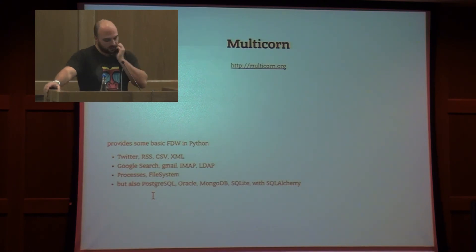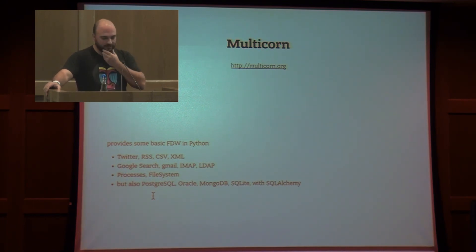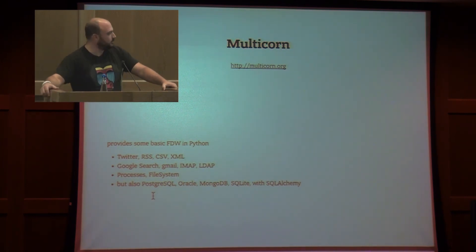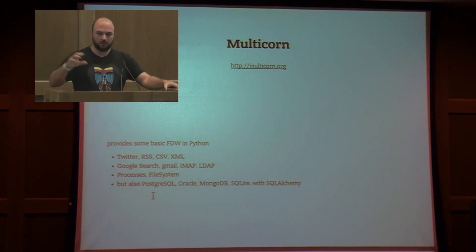But we can do more. FDW in Postgres with Python — we can fetch from Twitter, from your RSS feed, from a CSV file, from XML, from Google search, Gmail, IMAP, LDAP. You can interact with your processes and the file system on your computer. And of course you can communicate with Postgres, Oracle, MongoDB, SQLite, and SQLAlchemy. Multicorn is just a wrapper of the foreign data wrapper API in Python.